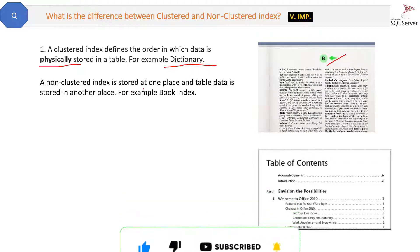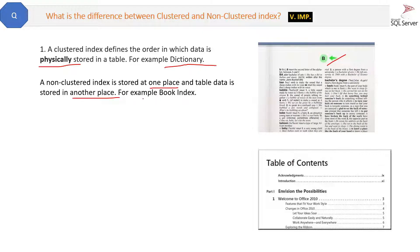On the other hand, a non-clustered index is stored at one place and the table data is stored in another place. For example, a book index — in a book, the index is stored at the beginning of the book and the book data is stored after that, so they are at two different places.